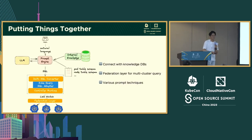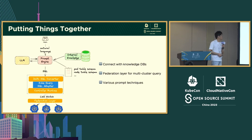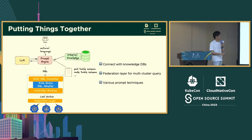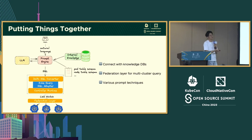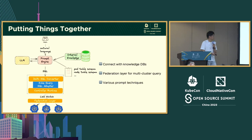Putting things together, here is our final solution for using language models to query Kubernetes resources with different user constraints. We have a prompt engine that supports different prompting strategies — chain-of-thought, self-consistency, and others — and can interact with our internal knowledge database to fetch corresponding background knowledge based on the user's input. Together with the pod SQL table schema, we send everything to the language model to get back the SQL. On the Kubernetes side, we added a federation layer so we can query not just a single cluster but across multiple clusters. That's our final design.